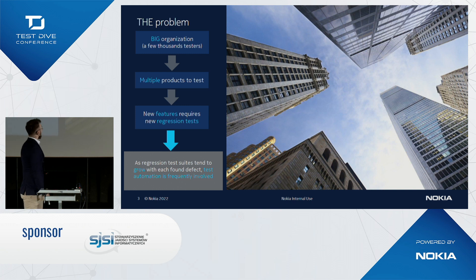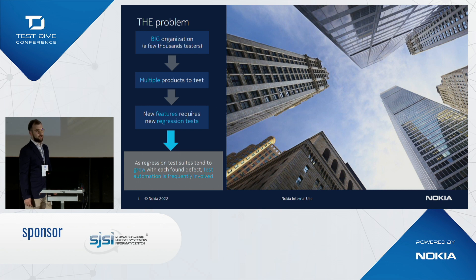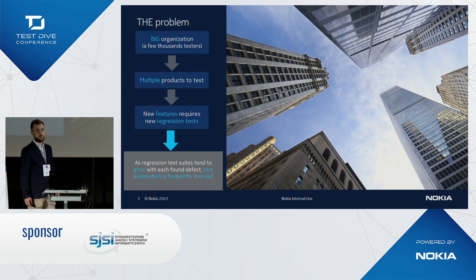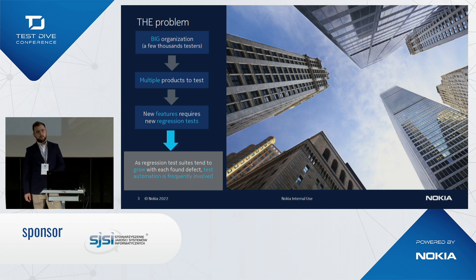So that is the problem. The pretty image of skyscrapers is not by mistake — it's connected with the problem. Regression testing is like expanding a city. At some point, the queue we want to execute during the regression is so big that we actually can't see the sky. We don't know the scope of the whole problem. And it is connected with Nokia as a corporation.